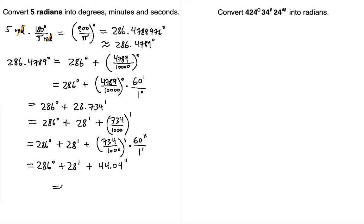Putting this all together into degrees, minutes, and seconds written next to each other gives you 286 degrees, 28 minutes, 44.04 seconds. This is your final result — the converted result of the given five radians.